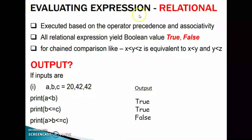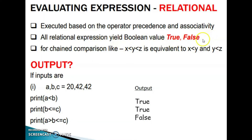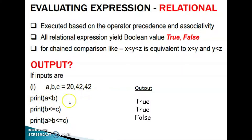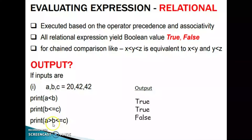For evaluating relational expressions, they are executed based on operator precedence and associativity. All relational expressions yield a boolean value, true or false. For combined comparison, x less than y less than z is equivalent to x less than y and y less than z. For example, with A=20, B=42, C=42: print A less than B gives true; print B less than or equal to C gives true; print A greater than B less than or equal to C gives false.